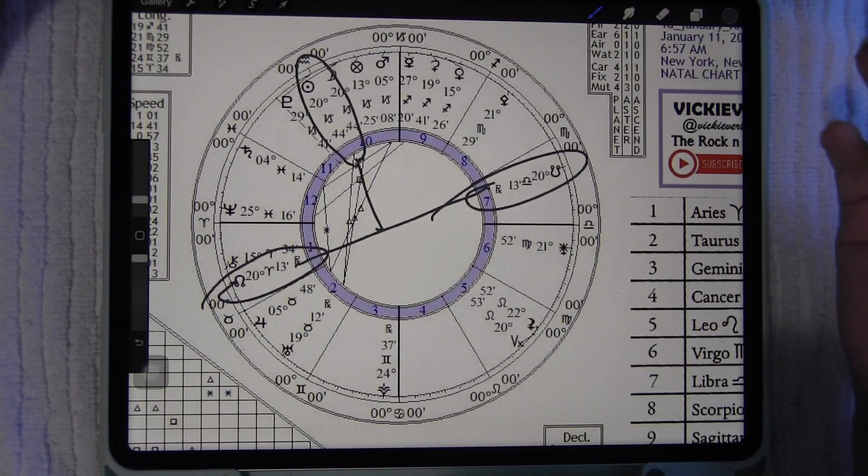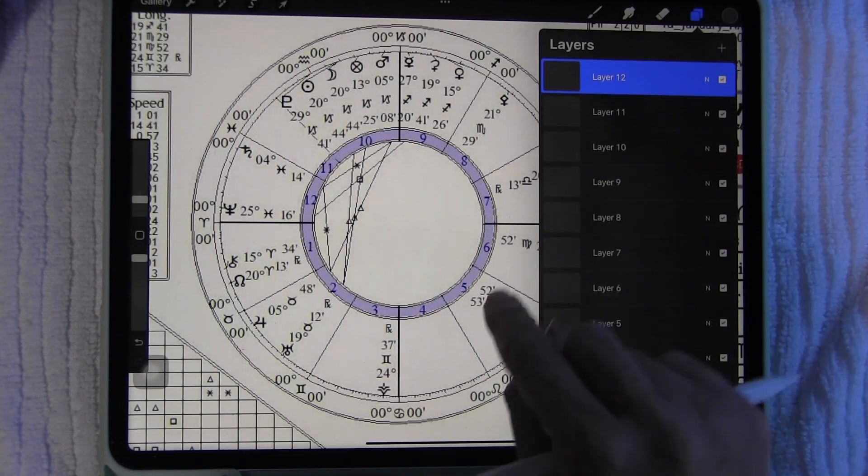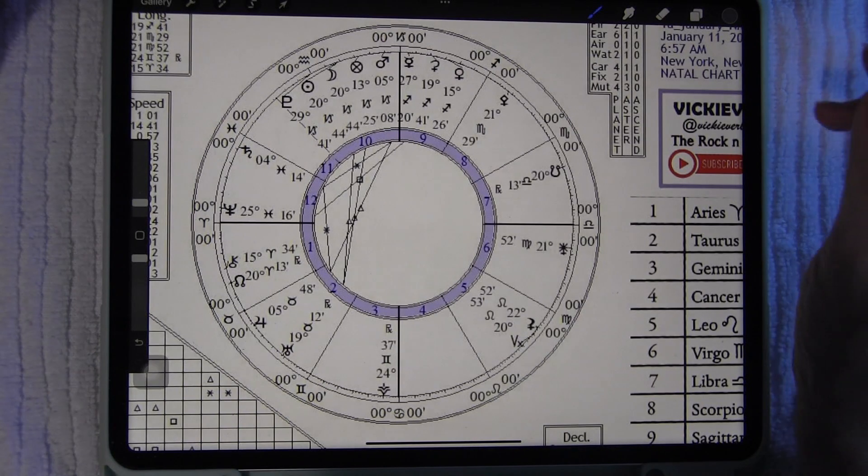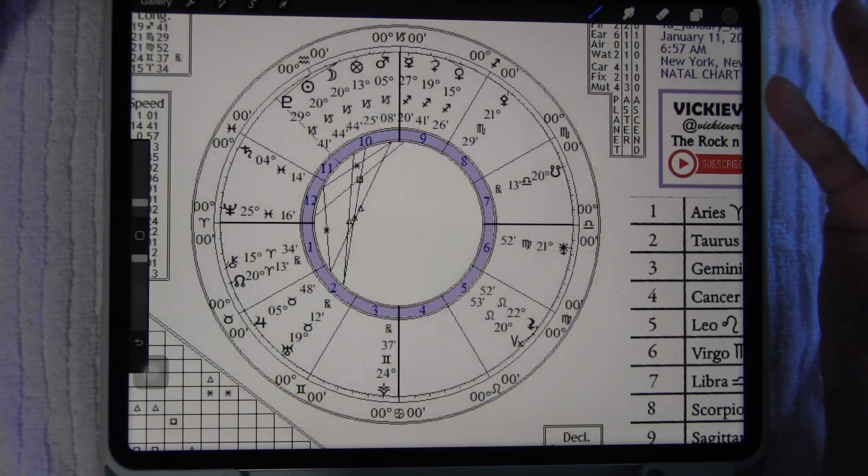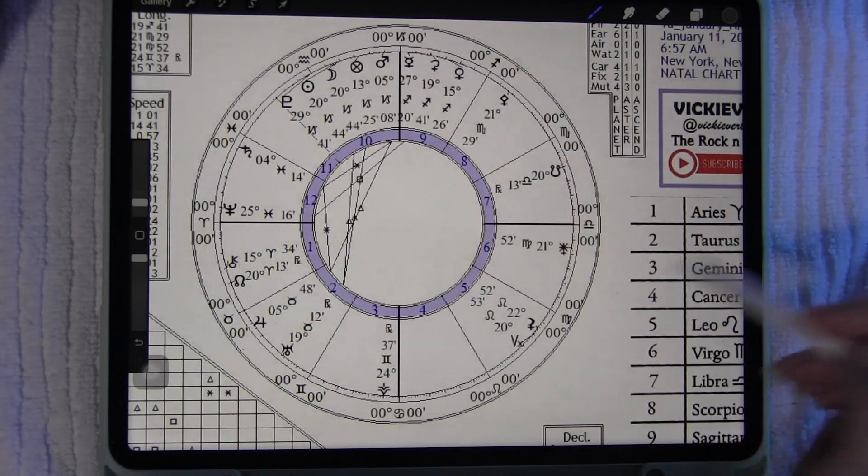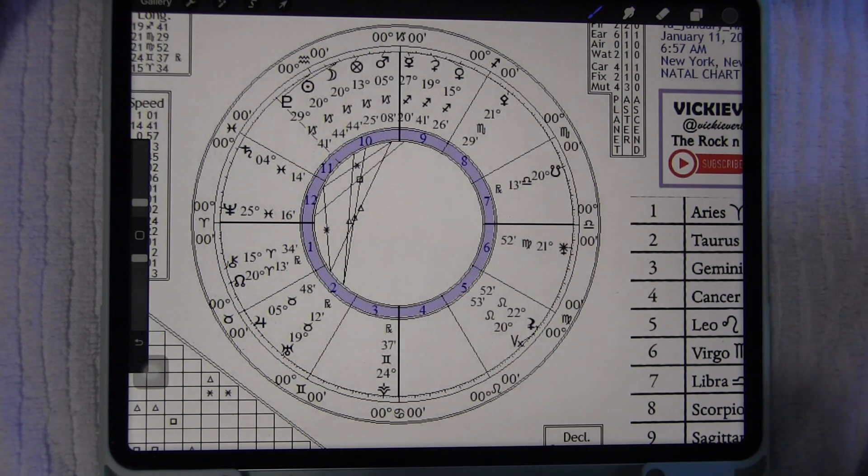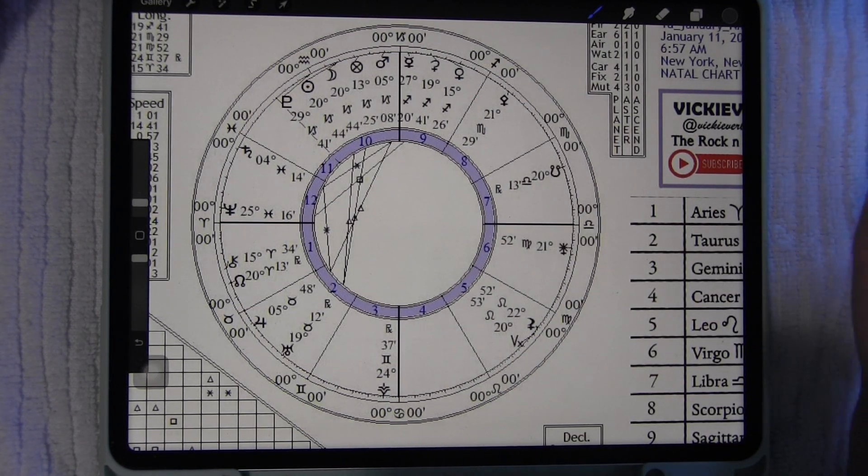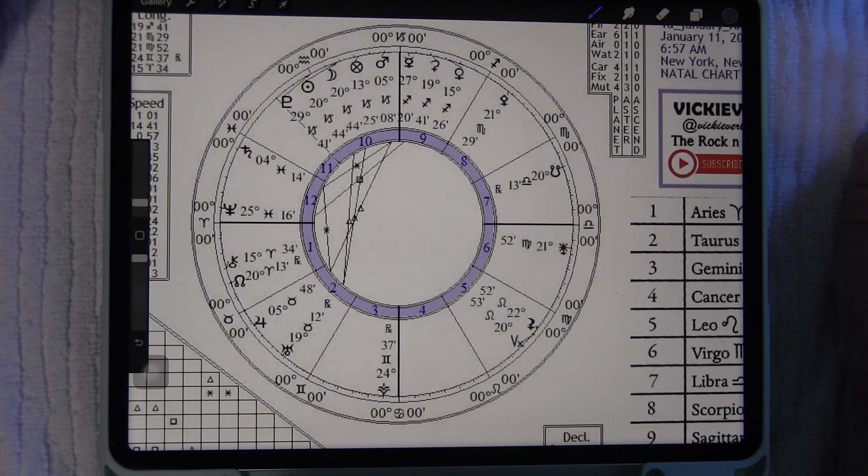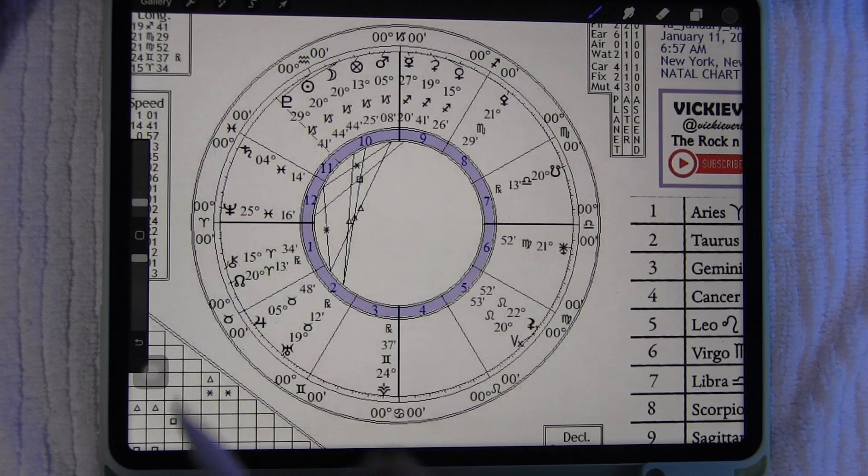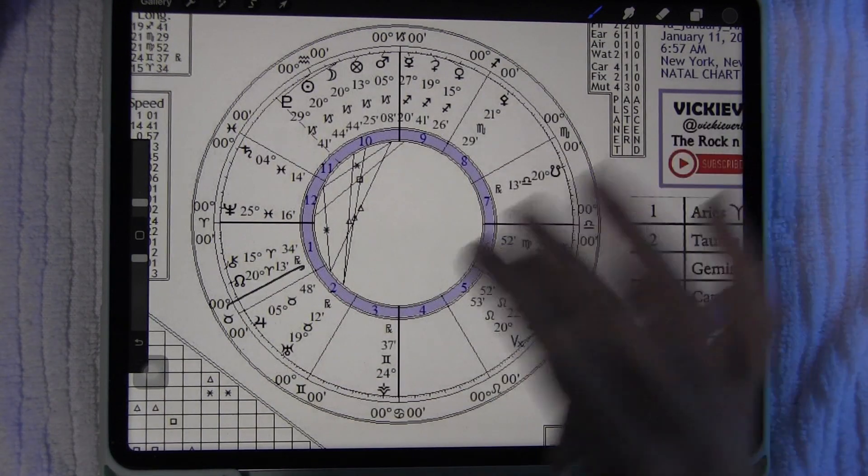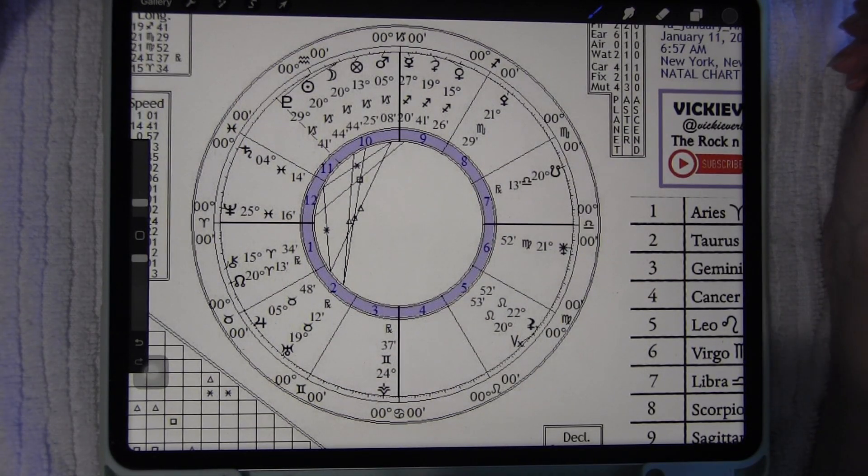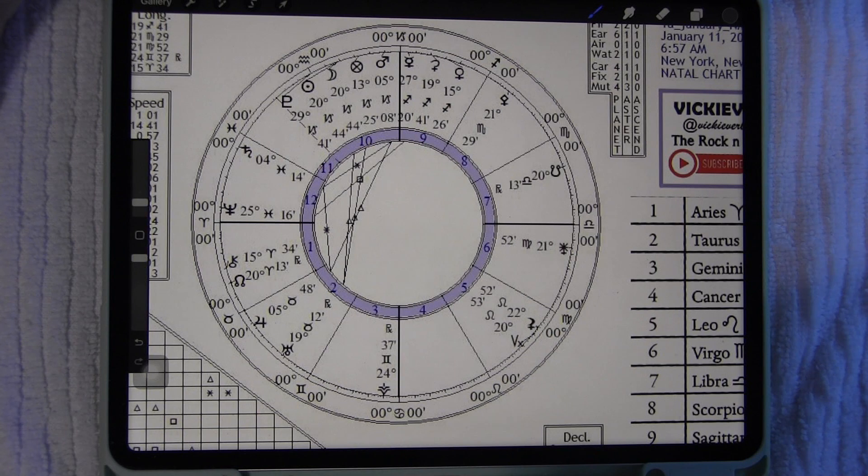So not only is Capricorn ruled by Saturn, bringing in that karmic element, but it's squaring up with the nodes of fate, which are also highly karmic. My guides just came through with: it's karmic turning points. It's a chance to build this new foundation, to clear these karmic debts, to let them go with peace in the sign of Libra. Let go in love. Let go of the past with love and let go and move forward in peace, but move forward with determination using the two horned creatures of the goat and the ram.